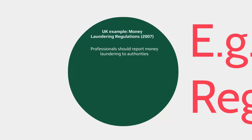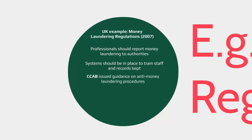Under the Money Laundering Regulations 2007, professionals must report money laundering to authorities, systems should be in place to train staff, and records must be kept. The CCAB — the Consultative Committee of Accountancy Bodies — has also issued guidance stating that businesses must establish adequate and appropriate policies and procedures relating to risk assessment and management to prevent operations related to money laundering or terrorist financing.